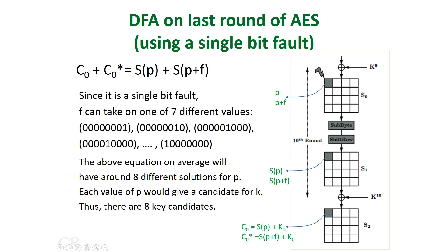Based on this, the attacker builds the equation using C0 XOR C0*, where C0* is the faulty ciphertext byte and C0 is the fault-free ciphertext byte. For each of the different values of the fault f, the attacker iterates through all possible values that satisfy this equation. Since the AES S-box is well known, we can identify 8 values for p and therefore obtain 8 different candidate values for the secret key k.